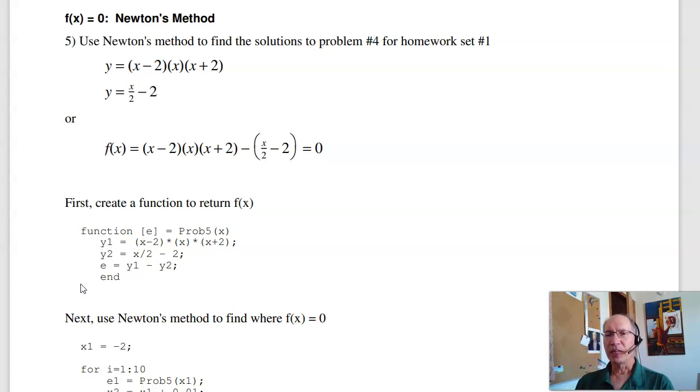Problem five is a repeat from homework set number one. Find the actual zero crossings for these two equations, two unknowns, or where they intersect. To do that, I'm going to change the problem, make it y1 minus y2, function equals zero. Now find the zero crossings.